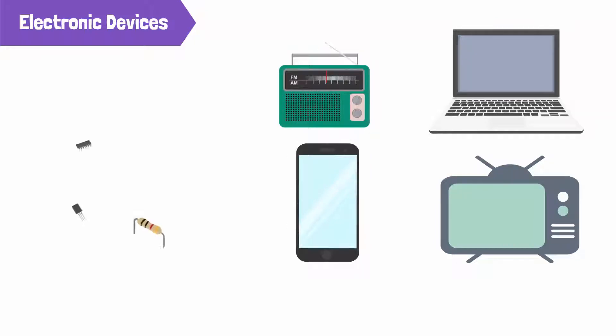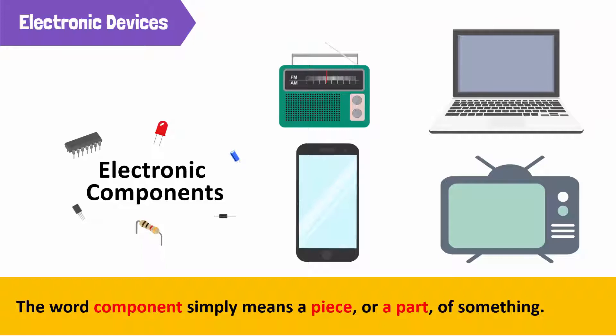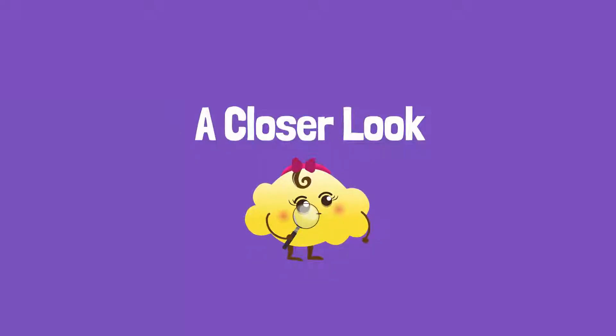Electronic devices such as computers, radios, TV, and cell phones are all made up of different electronic components. The word component simply means a piece of or a part of something. Let's take a closer look at the components that form an electronic device.